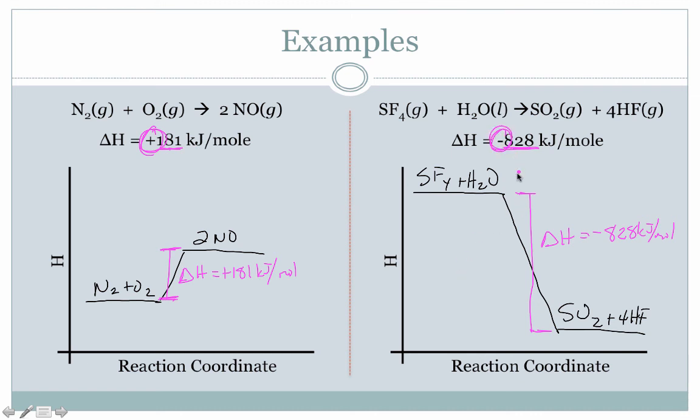Likewise over here, the negative sign of delta H meant that we were releasing energy in the process. That meant the products have less energy in them than the reactions we started with, and that excess energy is released. I drew using the exothermic version of the graph, and I drew a relatively large gap between the two of those because the value 828 is significantly larger than the 181.